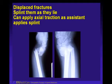Displaced fractures — splint them as they lie. You can apply axial traction as your assistant puts on the splint. There's no harm with gentle axial traction. This is a both-bone forearm fracture of the distal aspect with significant displacement that did not go through the growth plate.